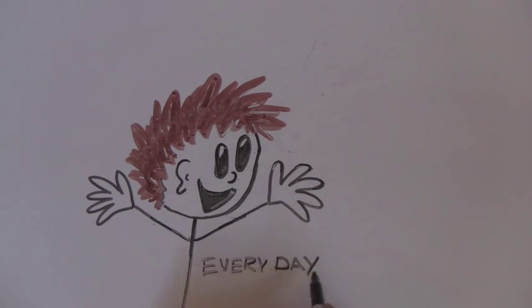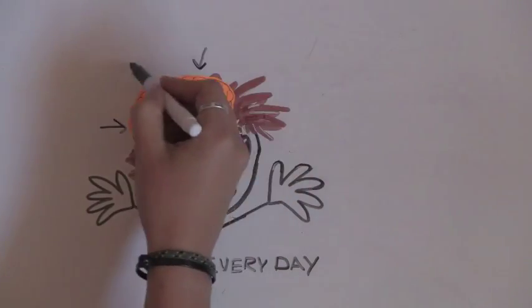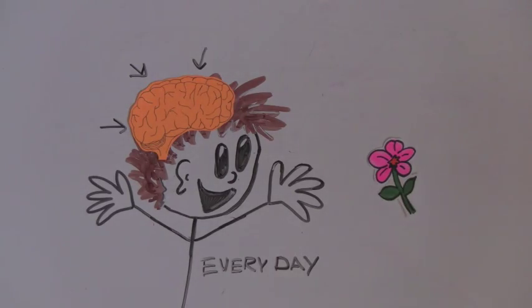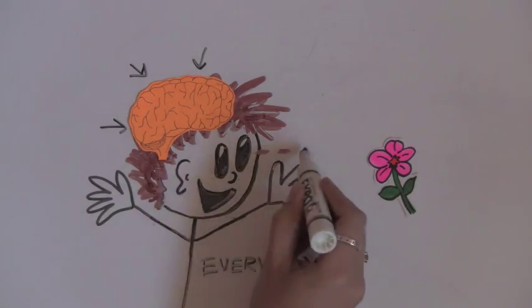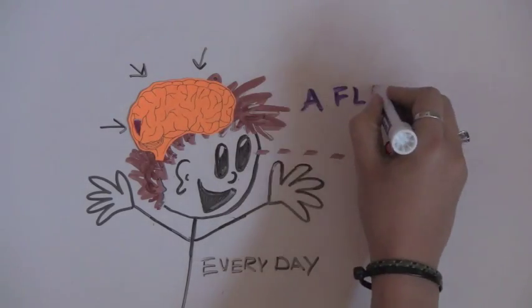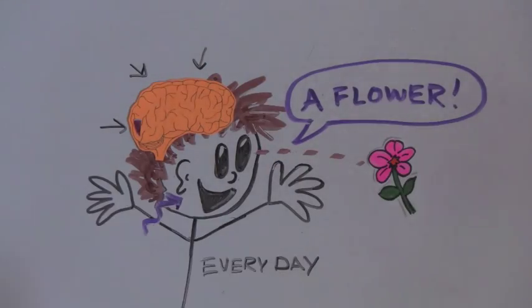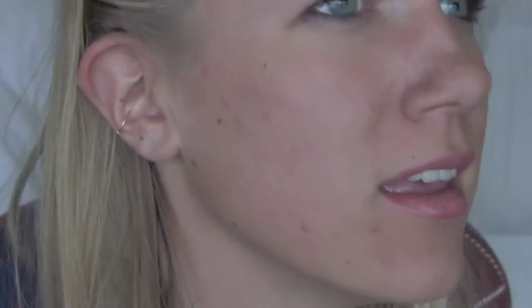Every day, our brain is bombarded with information about the world around us. Our five senses help give meaning to all of this information. And they are sight, hearing, I came in like a wrecking ball, touch.